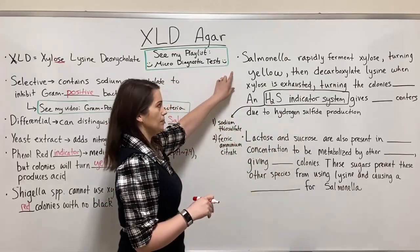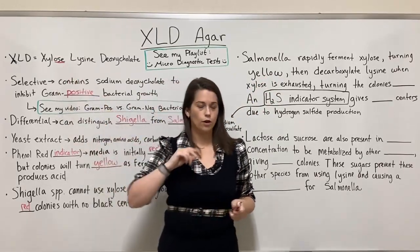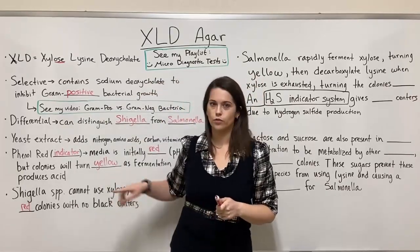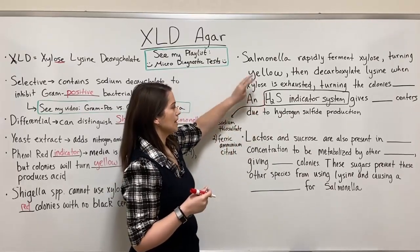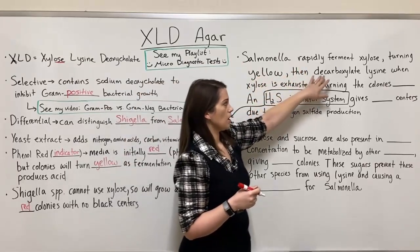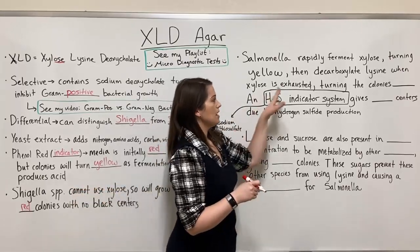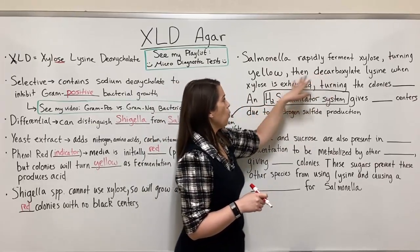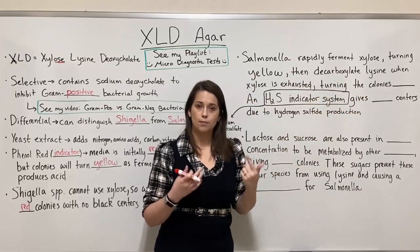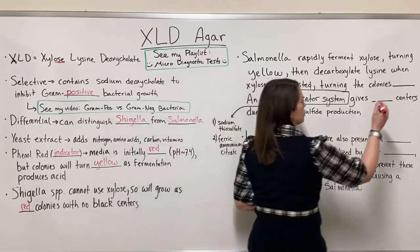Salmonella is more complex. Salmonella will rapidly ferment the xylose sugar, producing an acid that lowers the pH — the phenol red indicator kicks in and the colonies turn yellow. But once the xylose is exhausted, Salmonella will then decarboxylate lysine, because Salmonella has a lysine decarboxylase enzyme that Shigella lacks. This decarboxylation of lysine produces amines, which are basic or alkaline, and they raise the pH. So those colonies that were once yellow are going to turn red.